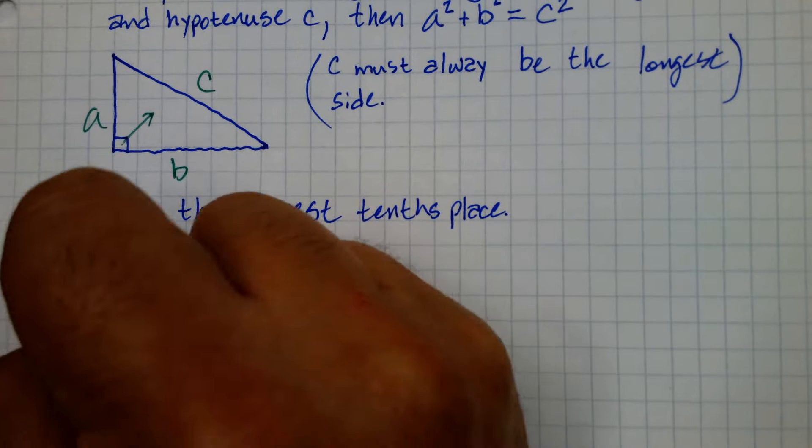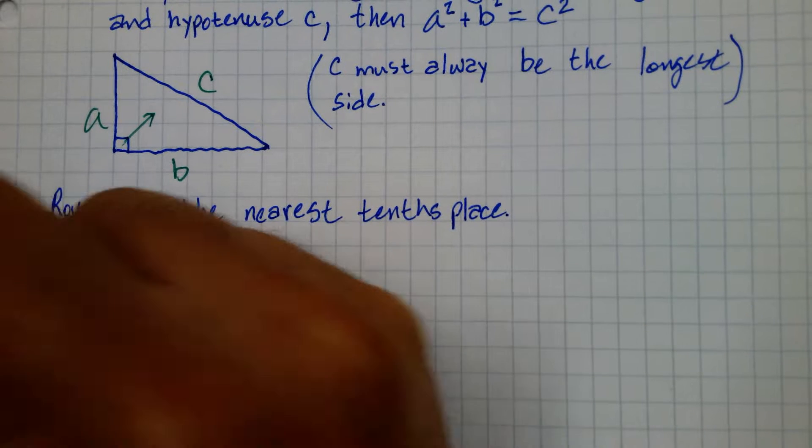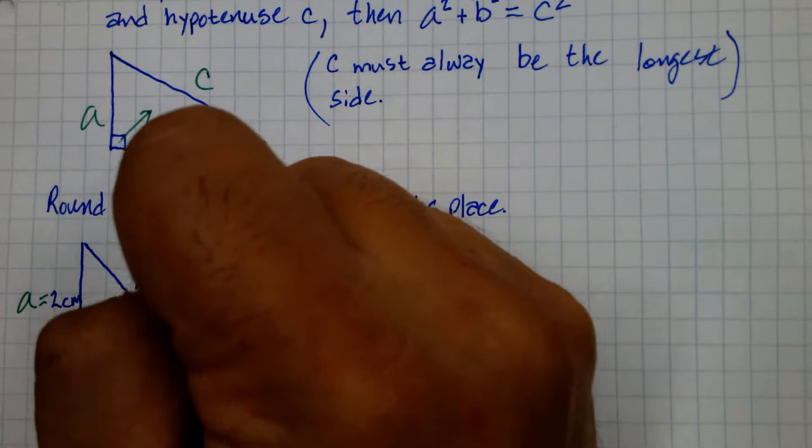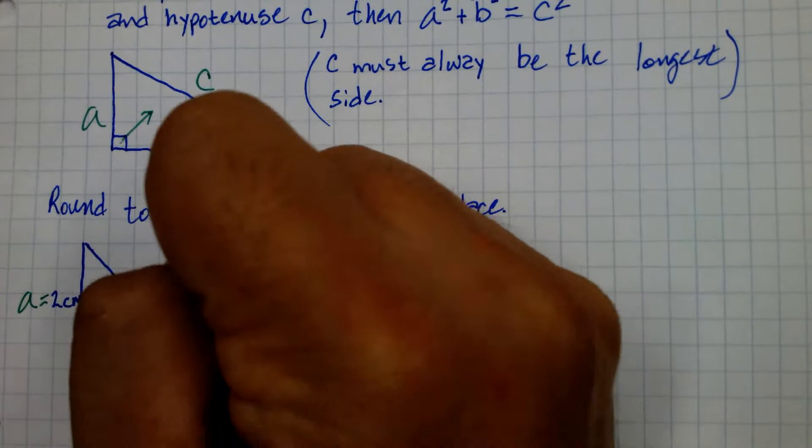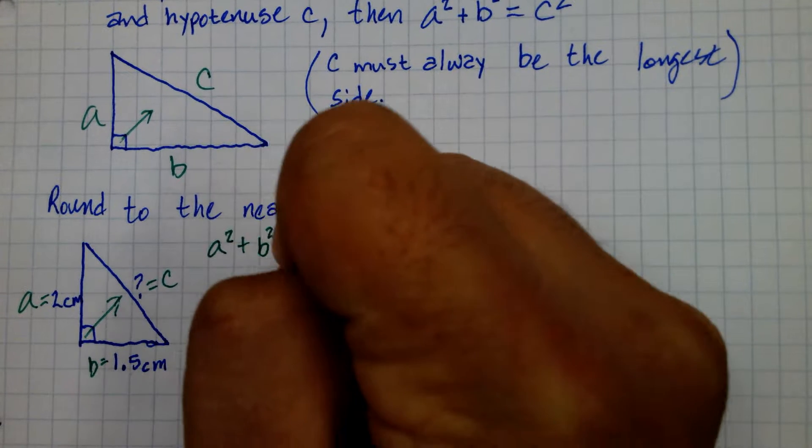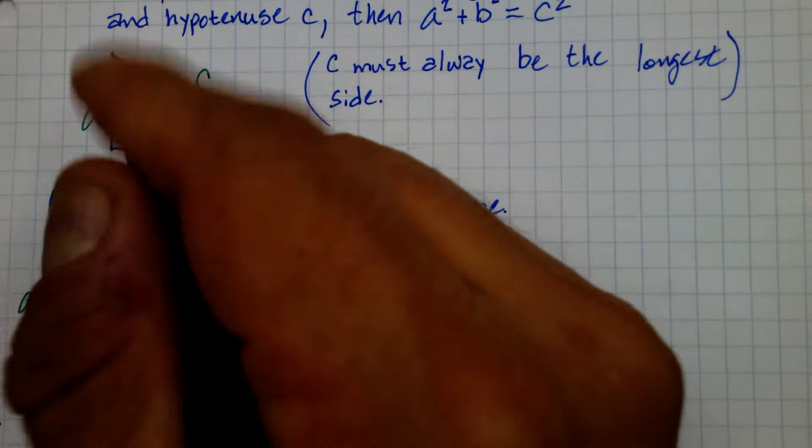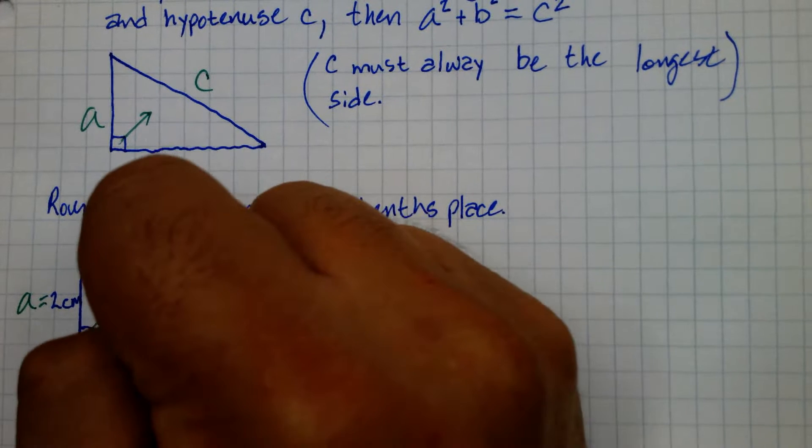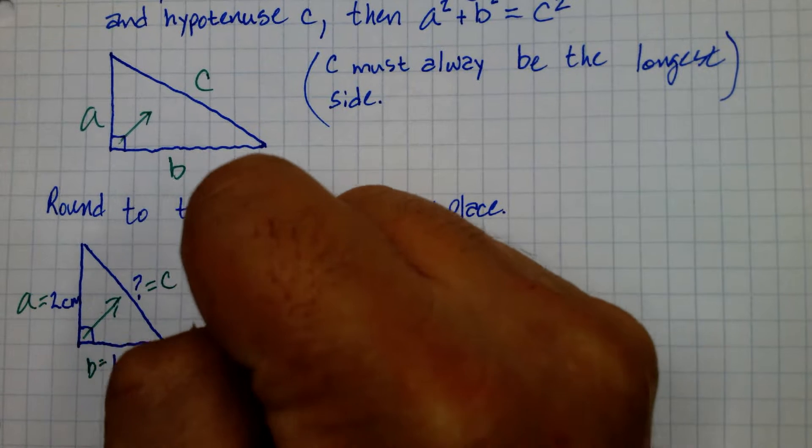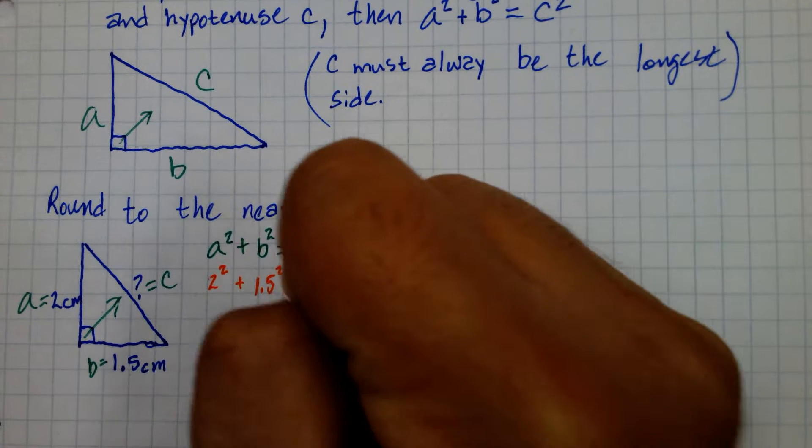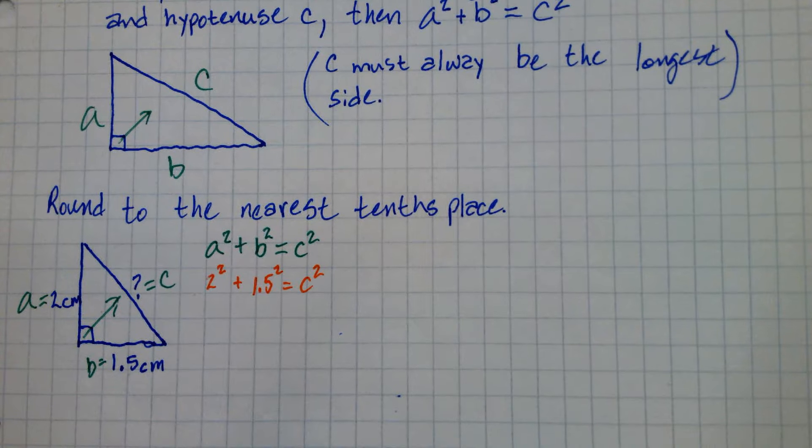Always there. So we'll call one of these A, one of these B. And it's as simple as this. So let's write down the Pythagorean theorem formula. Replace with actual numbers. So we're going to do 2 squared plus 1.5 squared equals our unknown C squared.